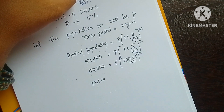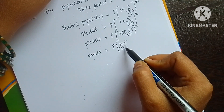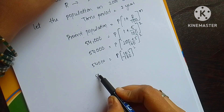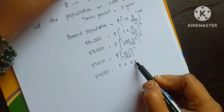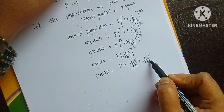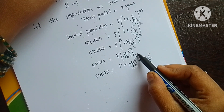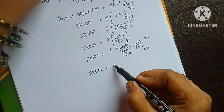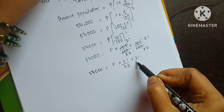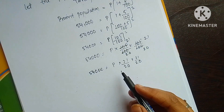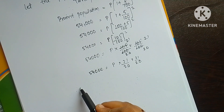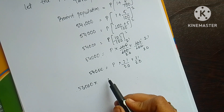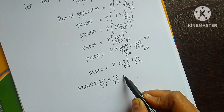So 54,000 = P into (105/100) squared. Simplifying 105/100 gives 21/20. So 54,000 = P into (21/20) squared. To calculate P, we bring the fraction to the other side as its reciprocal: P = 54,000 into (20/21) into (20/21).